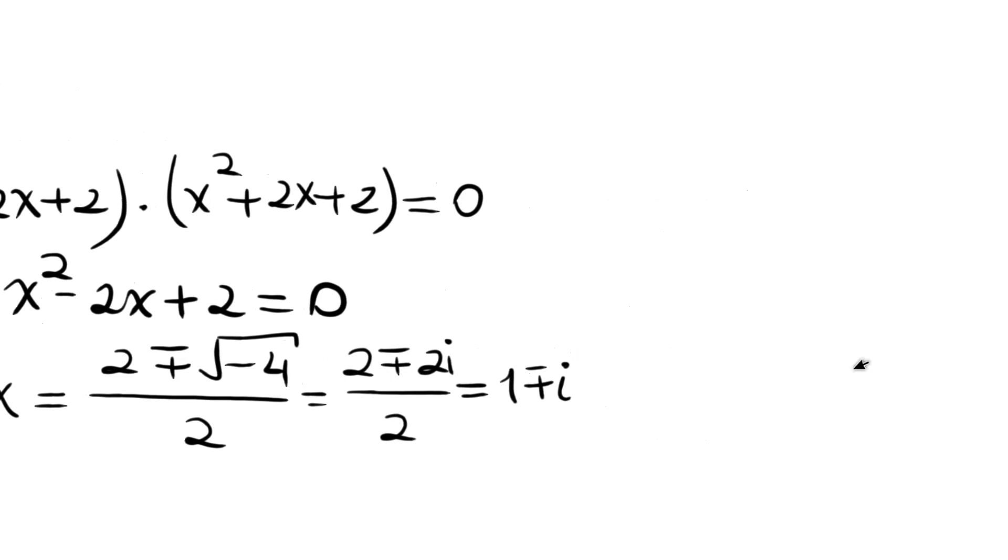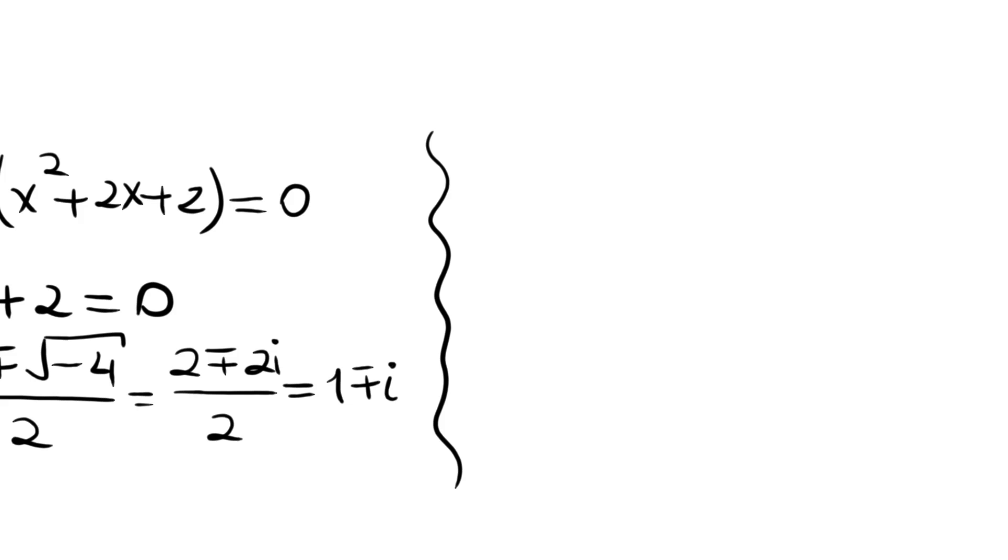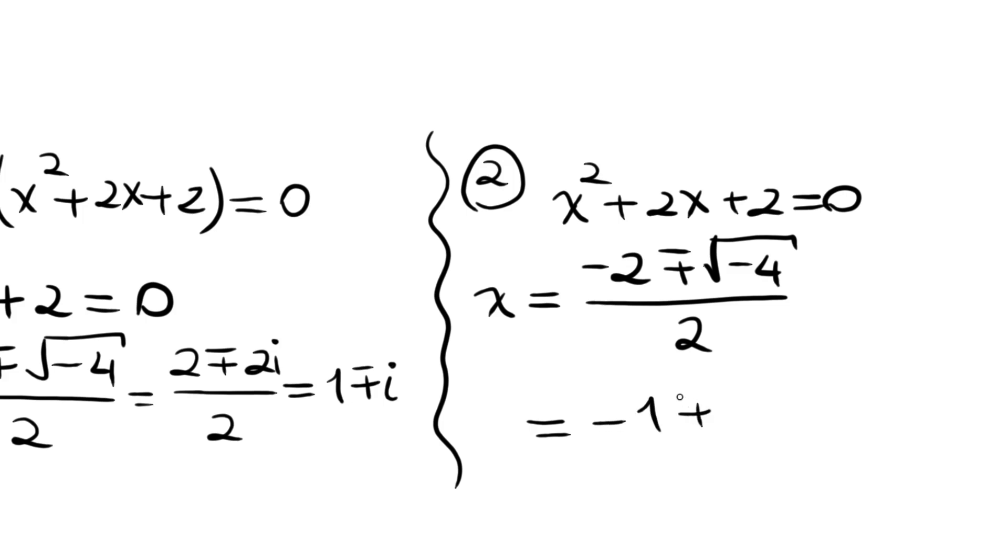Let's move to the other part. It's not hard to guess the root. X squared plus 2x plus 2 equals 0. Again from the quadratic formula we have minus 2 plus or minus root minus 4 divided by 2. So the roots here are minus 1 plus or minus i. These are our four roots for this quartic. Thank you for watching.